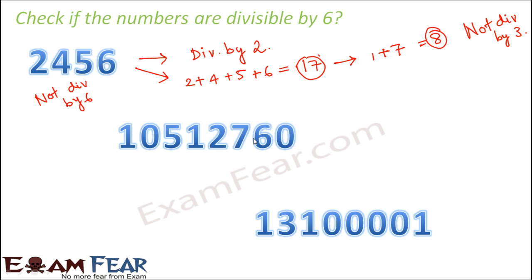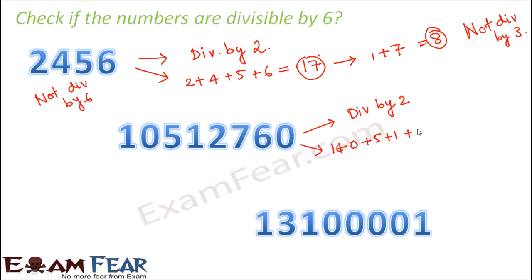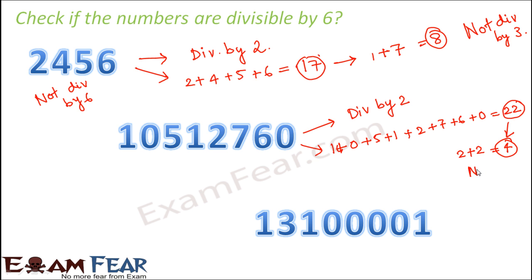The next number is 10512760. The units digit is 0, so it is divisible by 2. To check divisibility by 3, sum the digits: 1 + 0 + 5 + 1 + 2 + 7 + 6 + 0 = 22. Summing again: 2 + 2 = 4, and 4 is not divisible by 3. Therefore this number is divisible by 2 but not by 3, so it is not divisible by 6.